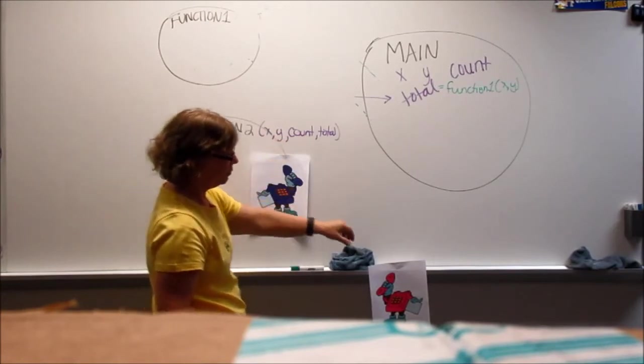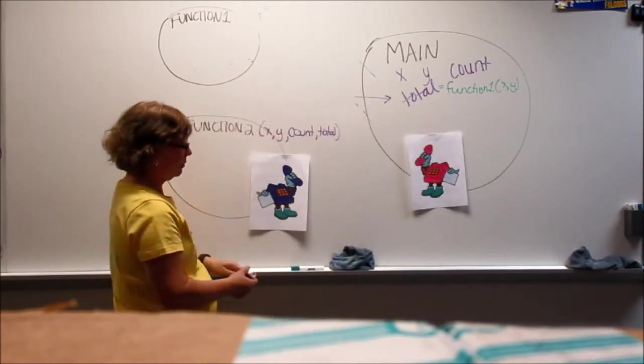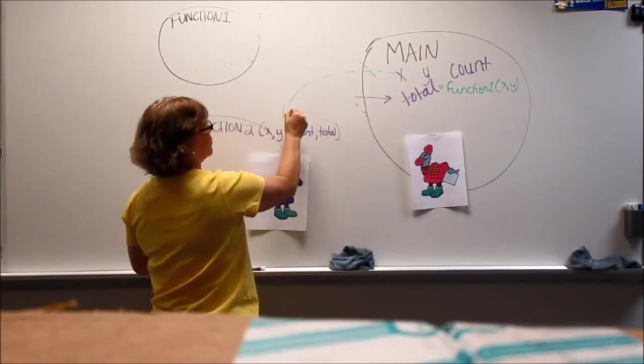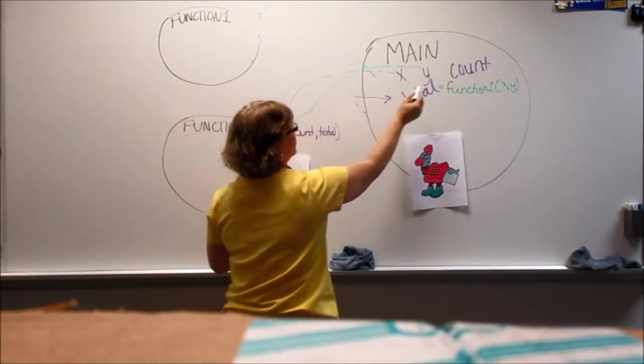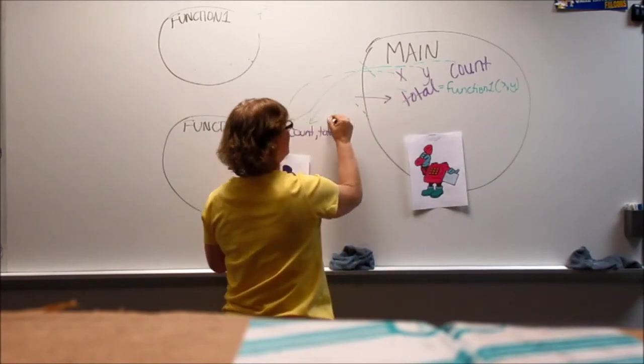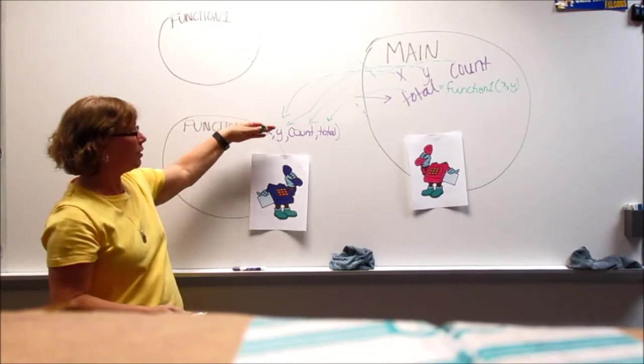So, function two gets on the phone, but the main island says, hey, I need the values. So, the value of x gets passed over. Just a copy. The value of y gets passed over. Just a copy. It's because it's happening over the phone. So, it's not actually moving, but whatever was stored in that memory location gets passed over here.